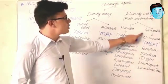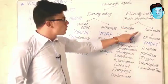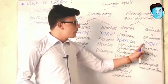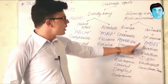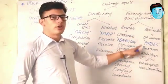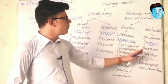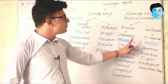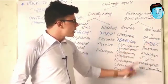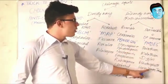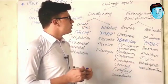For irreversible anticholinesterases we have the trick PMDES: P stands for Parathion, M stands for Malathion, D for Dyflos, E stands for Ecothiopate, and S stands for Sarin, Soman, and Tabun — all of which are nerve gases.